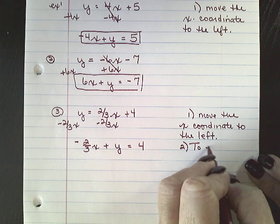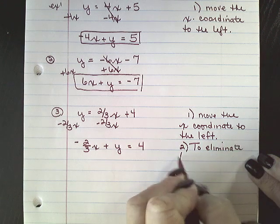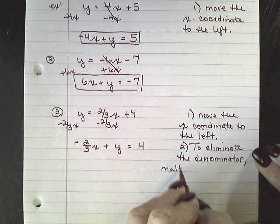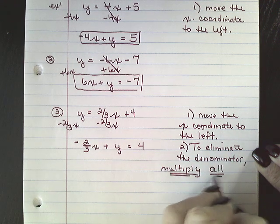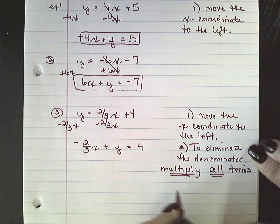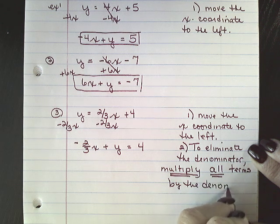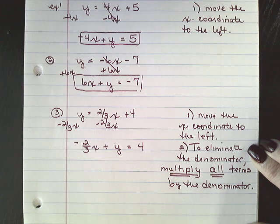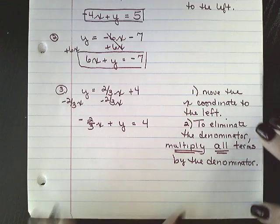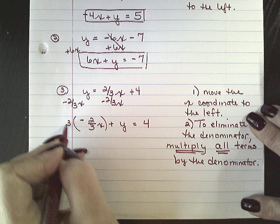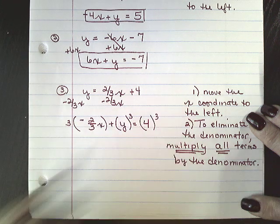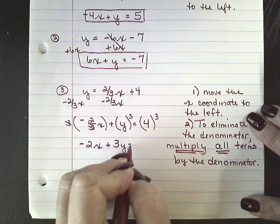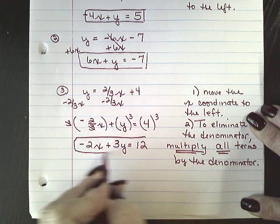And that is to eliminate the denominator. Multiply all terms by the denominator. We did this when we were solving equations using fractions. So I am going to multiply by 3, multiply by 3, multiply by 3. My 3's here are going to cancel each other out, and I'm going to have negative 2x plus 3y equals 12. And now I have standard form.